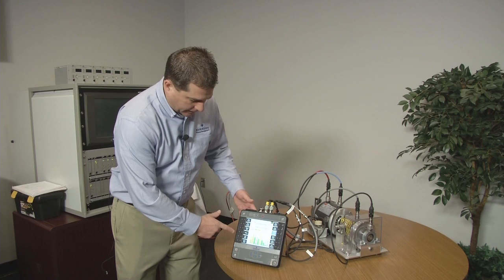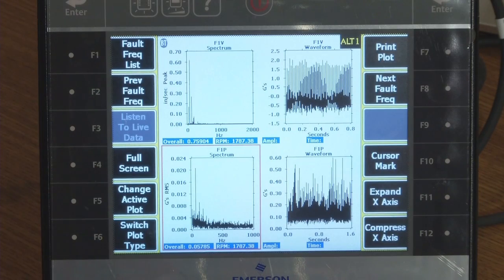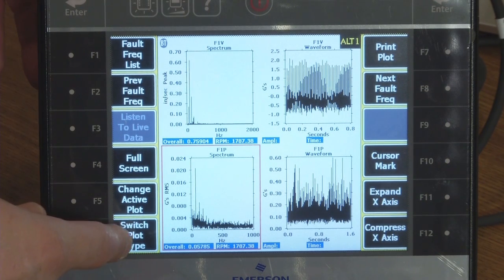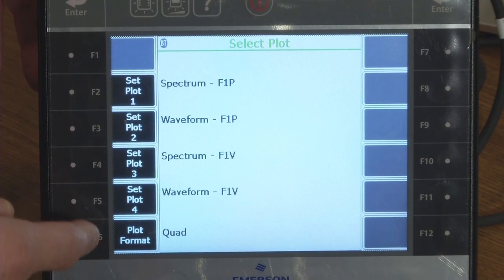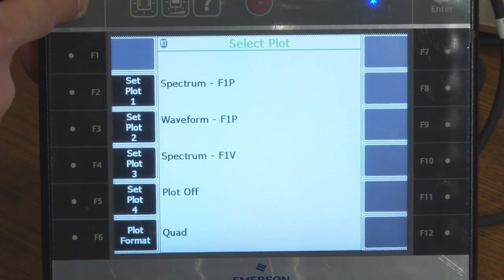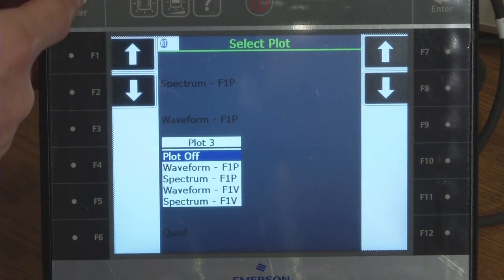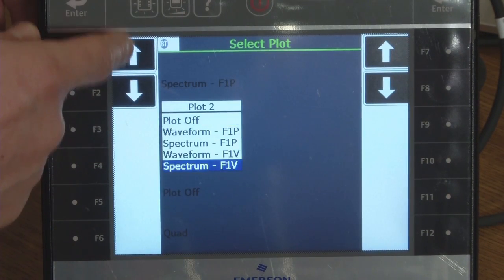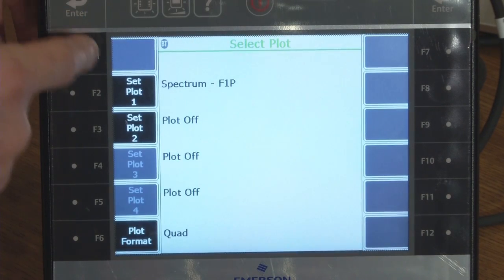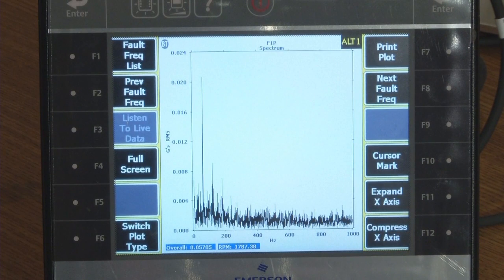One thing I can do is come down and press F5. Let's look at the data itself. F5 is plot data. And so it brings up my quad plot here. Now what I can do is turn off some of these other plots so I can magnify this particular plot a little larger. And so I could go to the bottom plots and turn them off. And so now I'm just left with one spectrum.